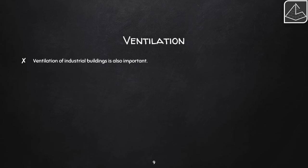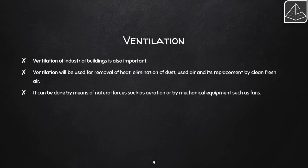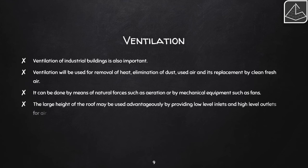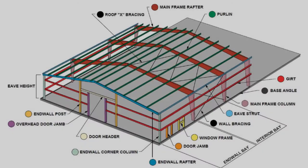Ventilation of industrial buildings is very important for removal of heat, eliminating dust, and circulating air properly. It can be achieved by natural forces such as aeration, or by mechanical equipment like fans. Globe-like rotating structures seen on roofs of industrial sheds are vents used to eliminate heat generated inside — heated air rises and exits through these vents. The large roof height can be used advantageously by providing low-level inlets and high-level outlets for air.